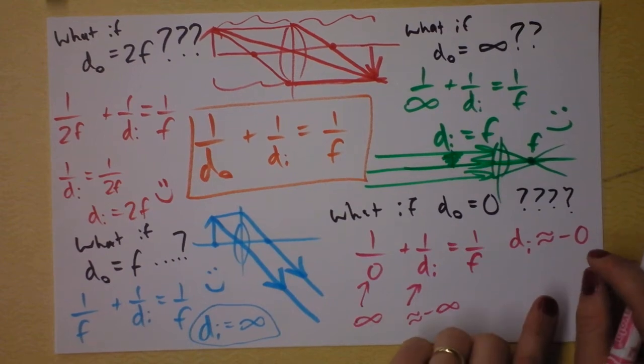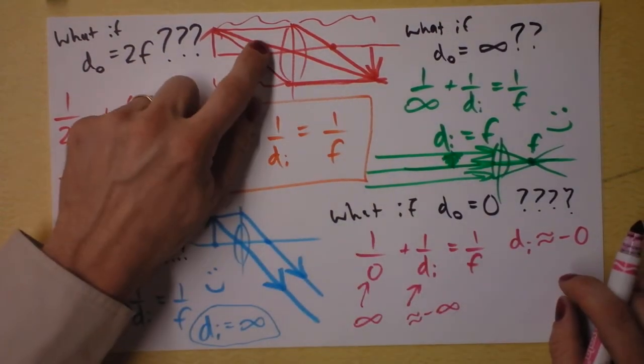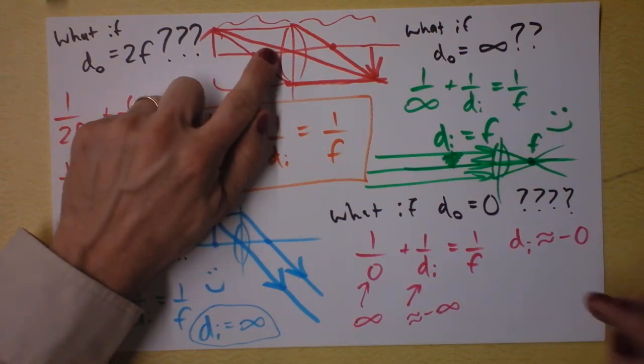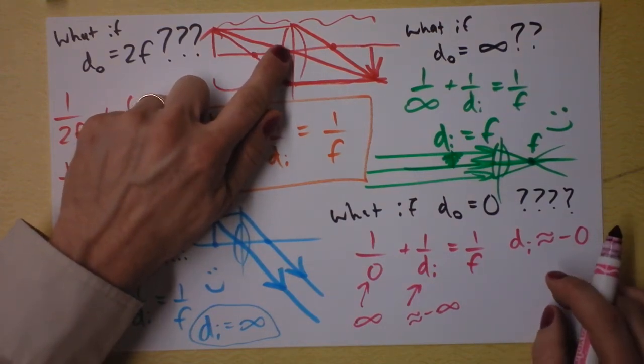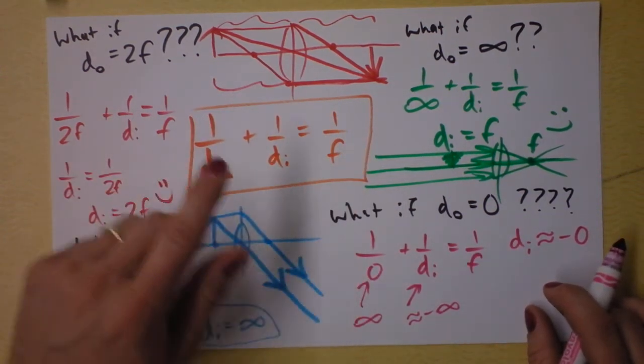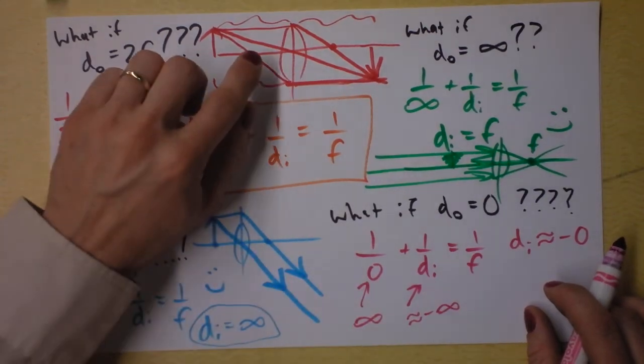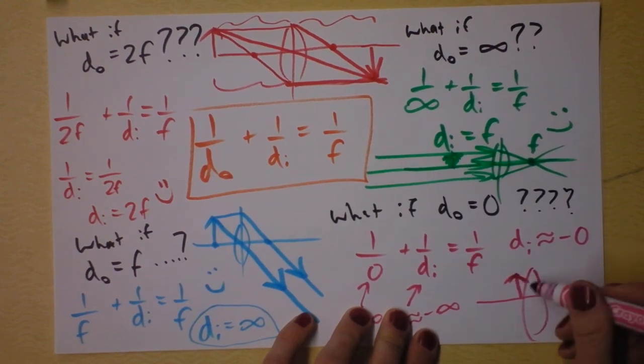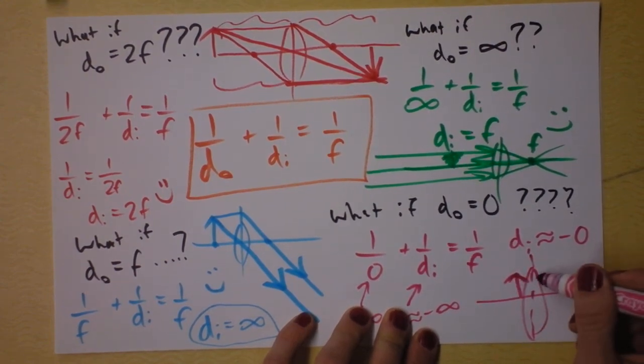That means that the image is on the same side of the lens as the object is, and it also means it's infinitesimally close to the line of action of the lens. But wait a second, so was my object. So drawing this is going to be a little bit tricky. Let's give it a try. I'm saying there's an object right here, and the image is also right here.